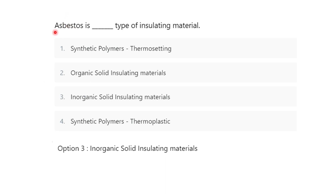Next question: asbestos is a blank type of insulating material. Options are: synthetic polymer, thermosetting organic solid insulating material, inorganic solid insulating material, or synthetic polymer thermoplastic. The correct answer is option 3 — inorganic solid insulating material. Asbestos is an inorganic solid insulating material.